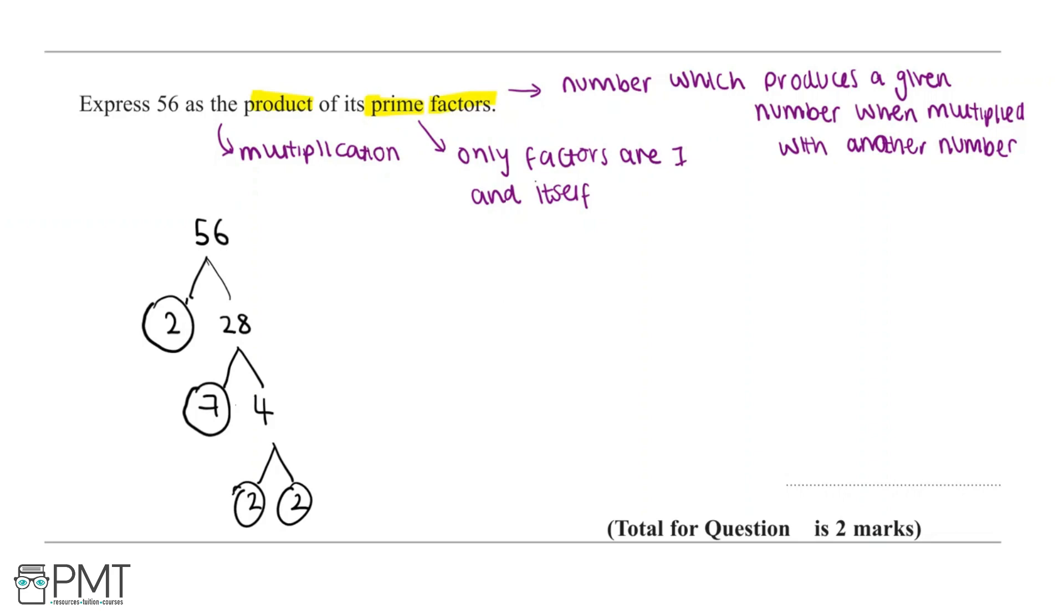So now that we've completed our factor tree, we can express 56 as a product of its prime factors.